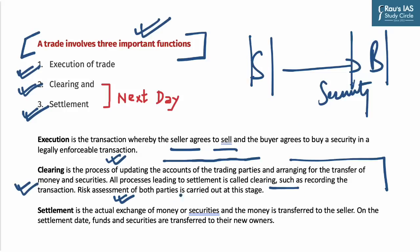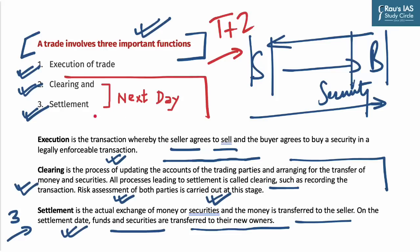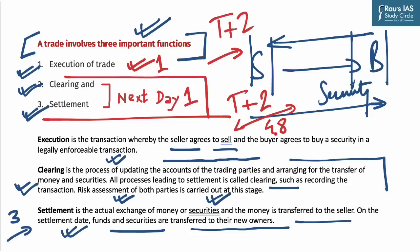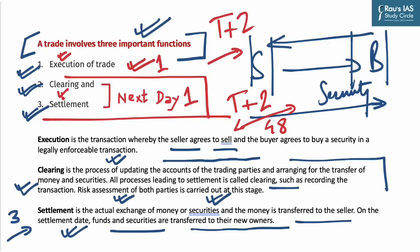Execution of trade is the transaction where the seller agrees to sell and the buyer agrees to buy a security. Clearing is the process of updating the accounts of trading parties and arranging for the transfer of money and securities — all processes leading to settlement — and risk assessment of both the seller and buyer is carried out at this stage. Settlement is the actual exchange of money and securities: money is transferred to the seller and the security is transferred to the buyer. Under T+2, clearing and settlement happened the next day; under T+1, the entire process must be completed within 24 hours.